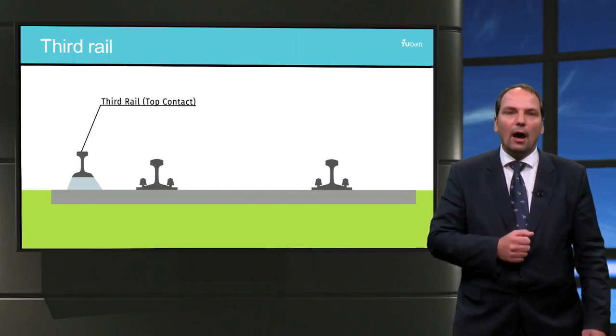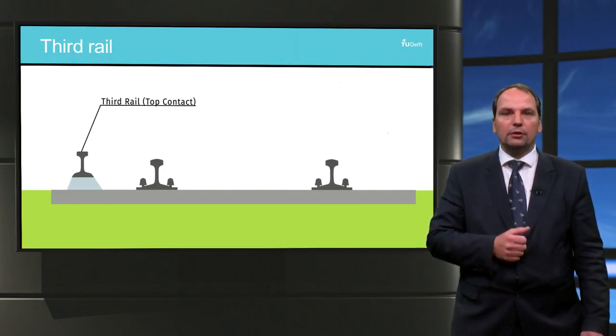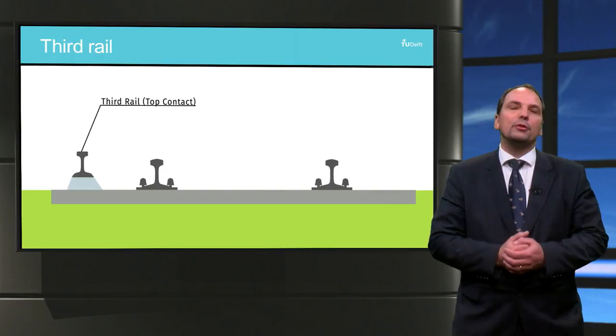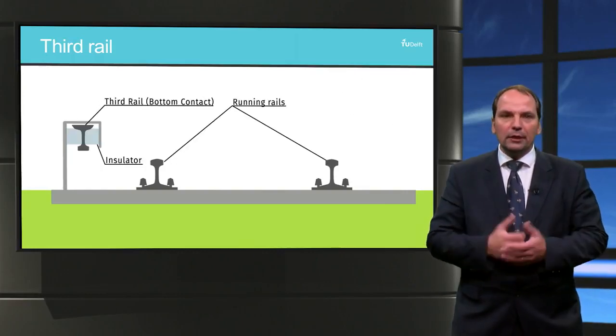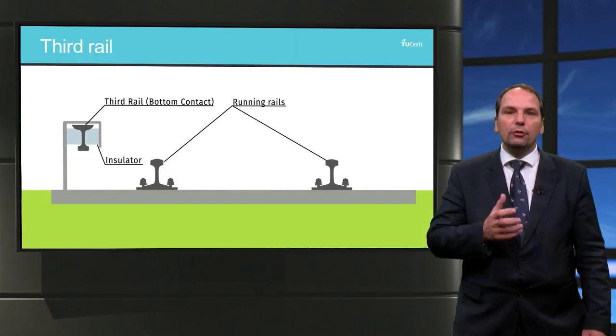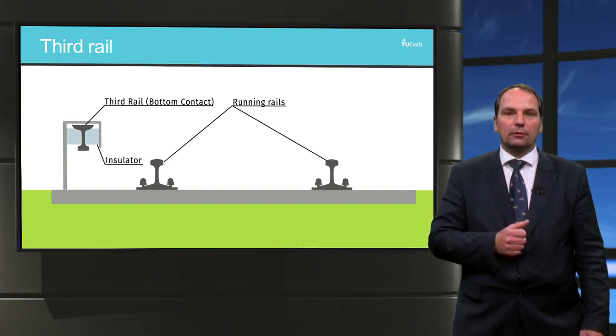This results in high resistive losses and thus the system requires relatively closely spaced feed points. For this reason, this system is only used for low speed light rail systems.